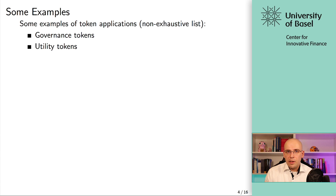Then utility tokens — tokens that allow you to make use of a certain protocol. For example, a smart contract that will only give you access to certain functions if you can pay with one of these protocol tokens — not the native protocol token of the blockchain, but a protocol token of an existing DeFi protocol. That would be a utility token. That's not something that requires trust, that has any external dependencies requiring an issuer to fulfill a promise — it's a utility that can be used on the blockchain itself.